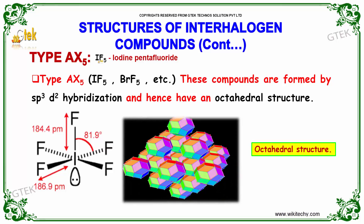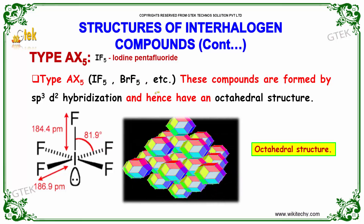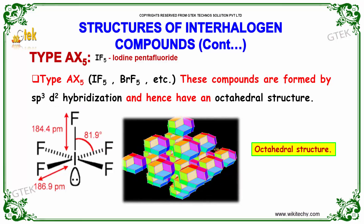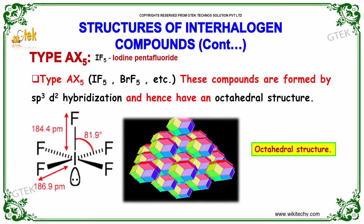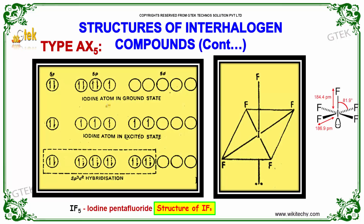Type AX5: iodine pentafluoride is the typical example. These compounds are formed by SP3D2 hybridization and hence have an octahedral structure. Here is the iodine atom in its ground state; the paired electrons are separated in the excited state. This is SP3D2 hybridization with everything paired. Here is the structure of iodine pentafluoride.